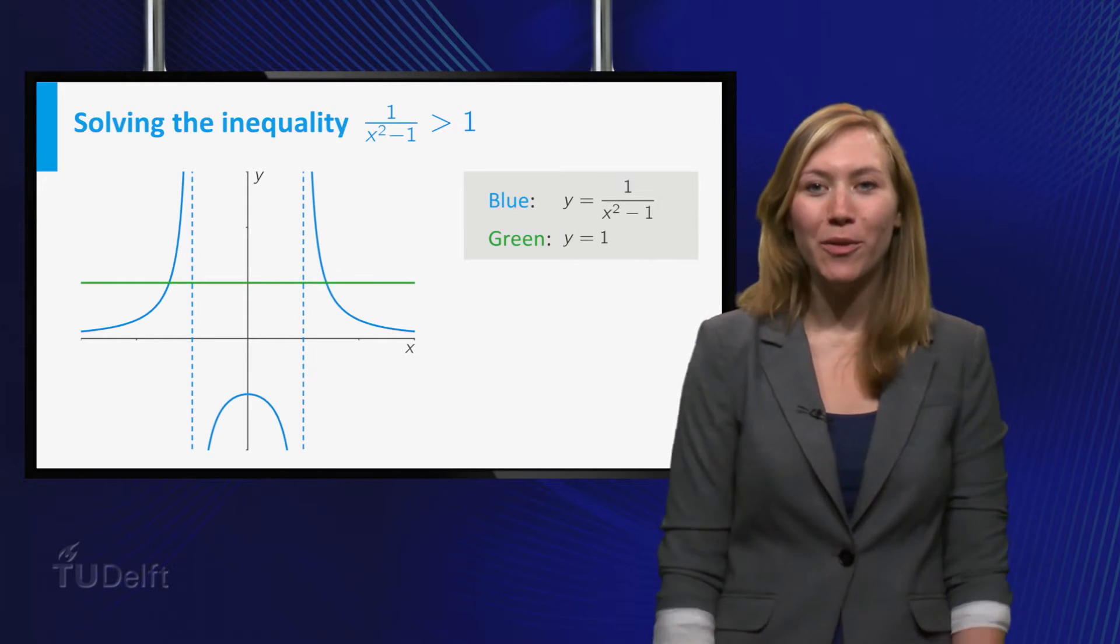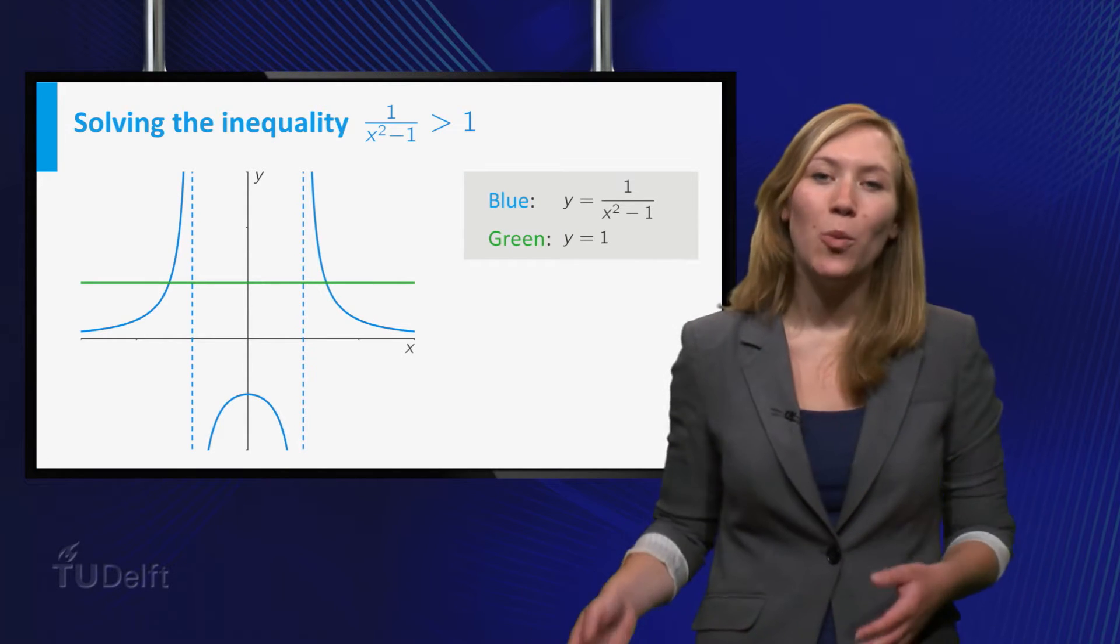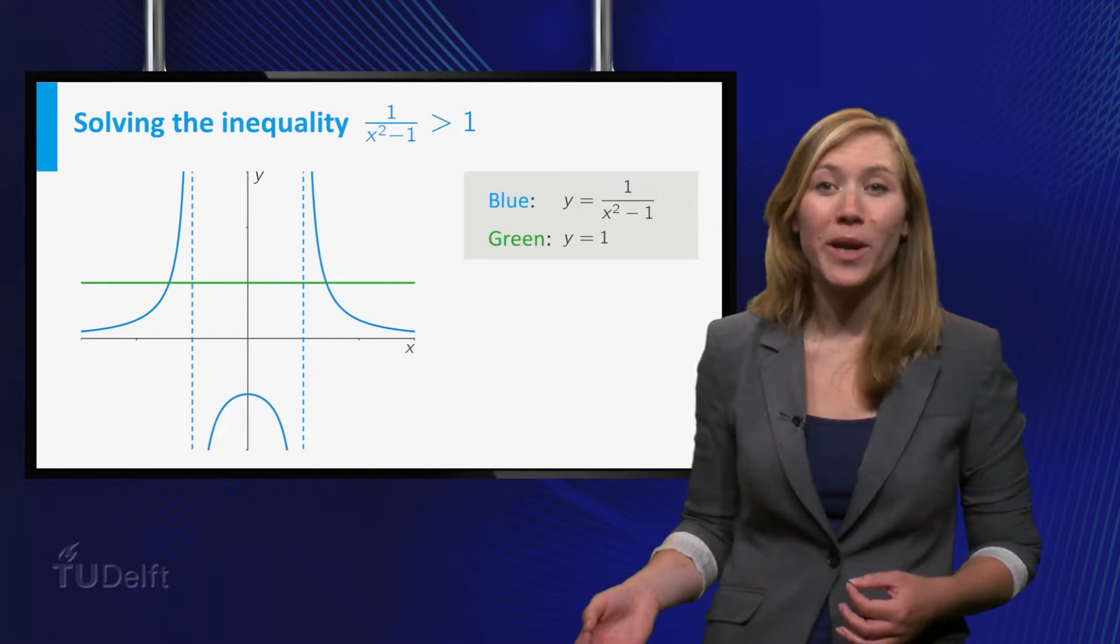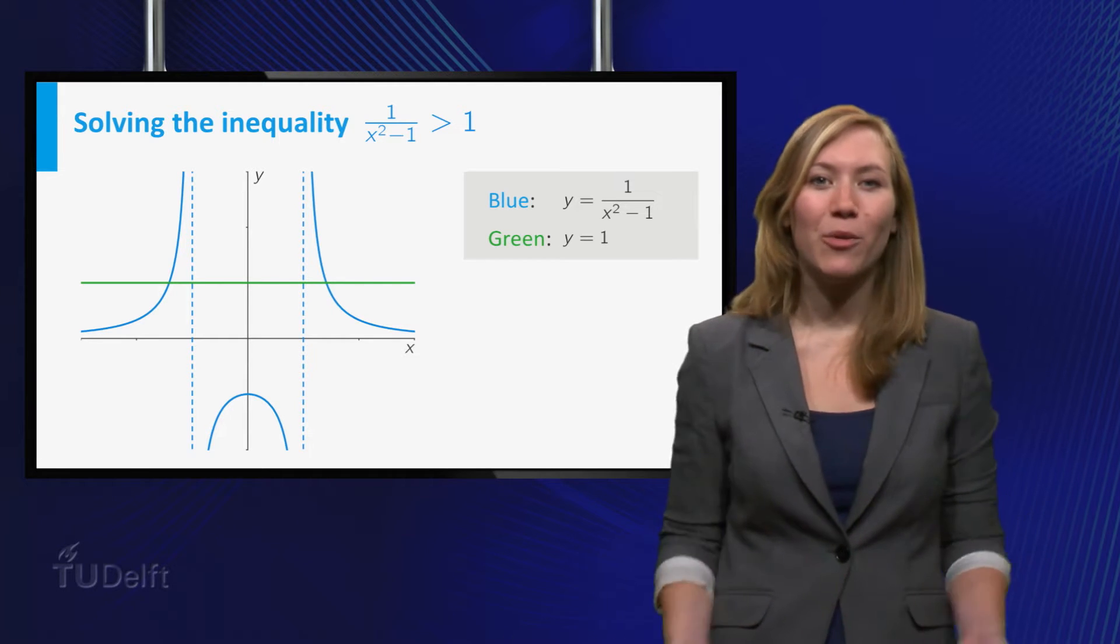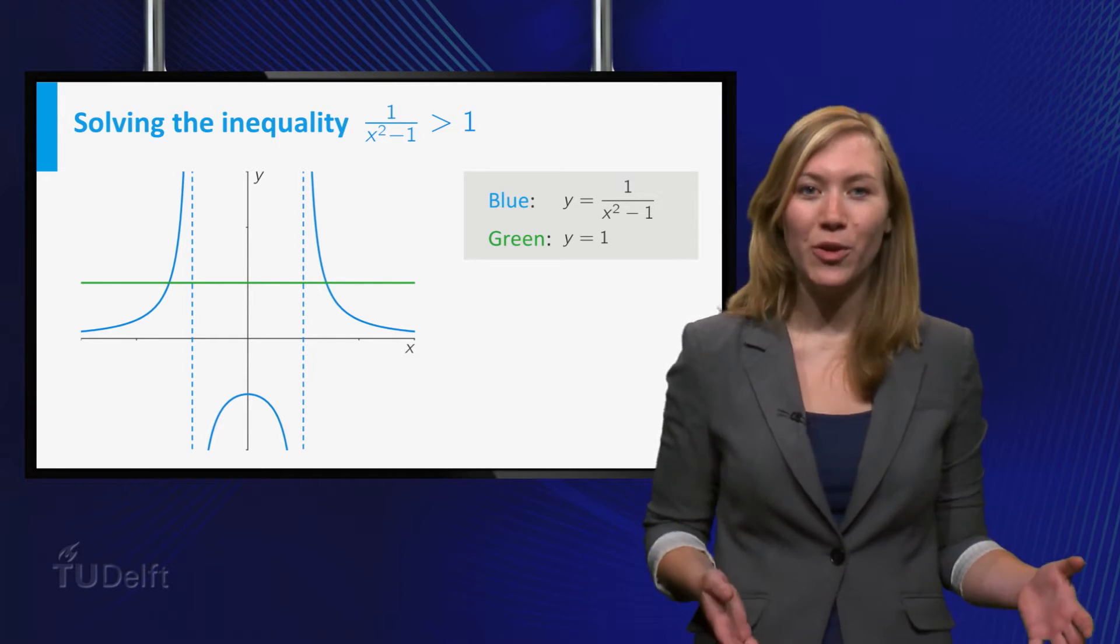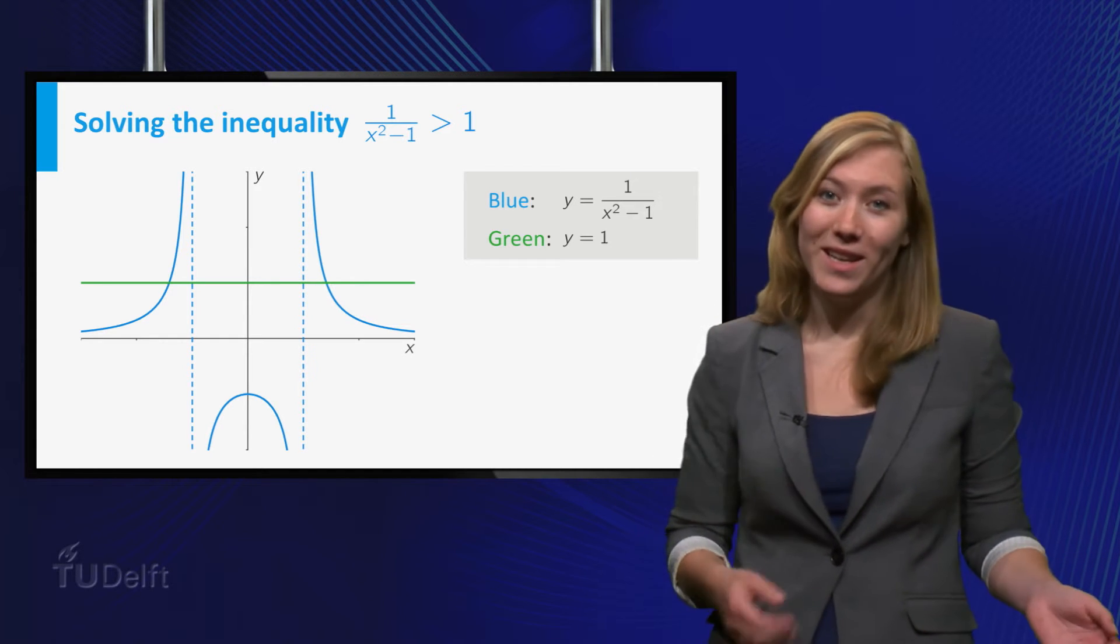In the picture you see the graph of the left hand side of the inequality, y equals 1 over x squared minus 1 in blue, and the graph of the right hand side, the horizontal line y equals 1 in green.